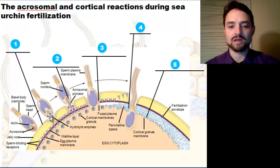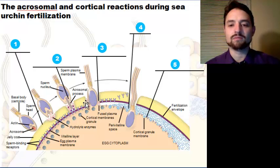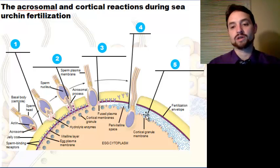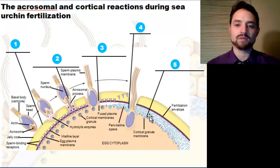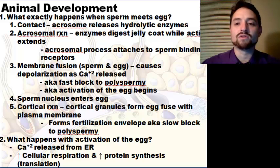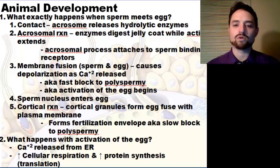To recap: you have the sperm and egg coming together, exocytosis of enzymes that degrade the jelly coat, the actin filament bridging the gap, uniting of the two membranes, and finally calcium release and hardening of the layer to prevent polyspermy. The key steps are: contact, acrosomal reaction, membrane fusion, sperm nucleus entering the egg, and the cortical reaction.